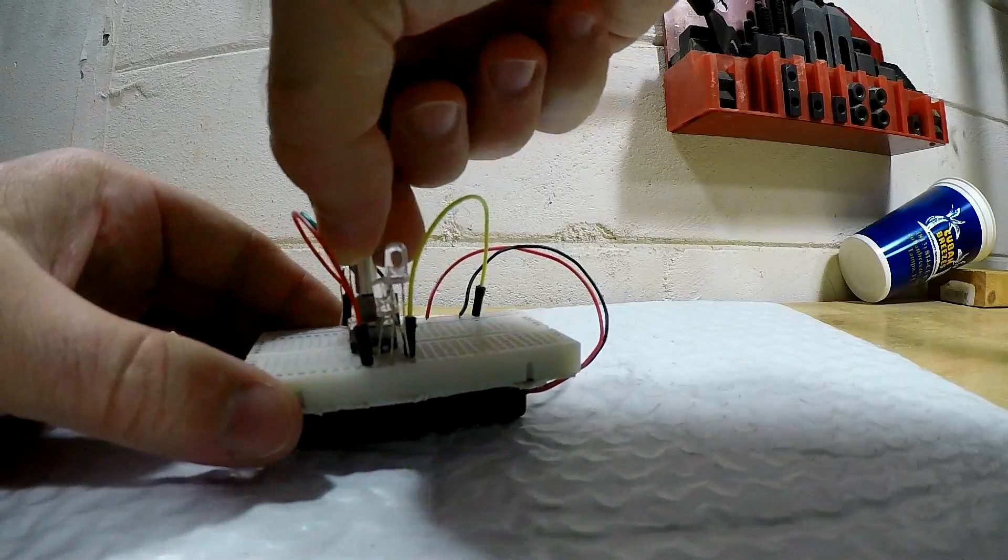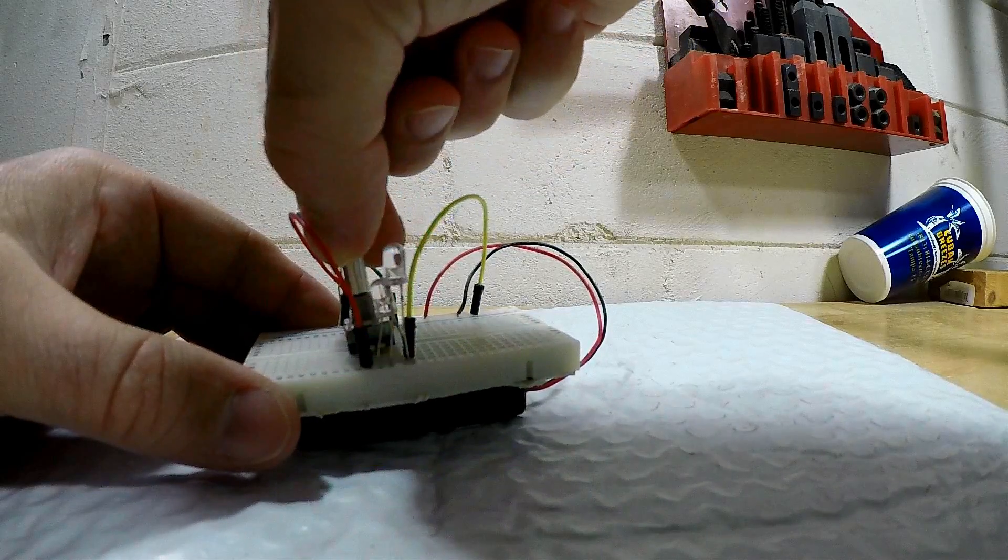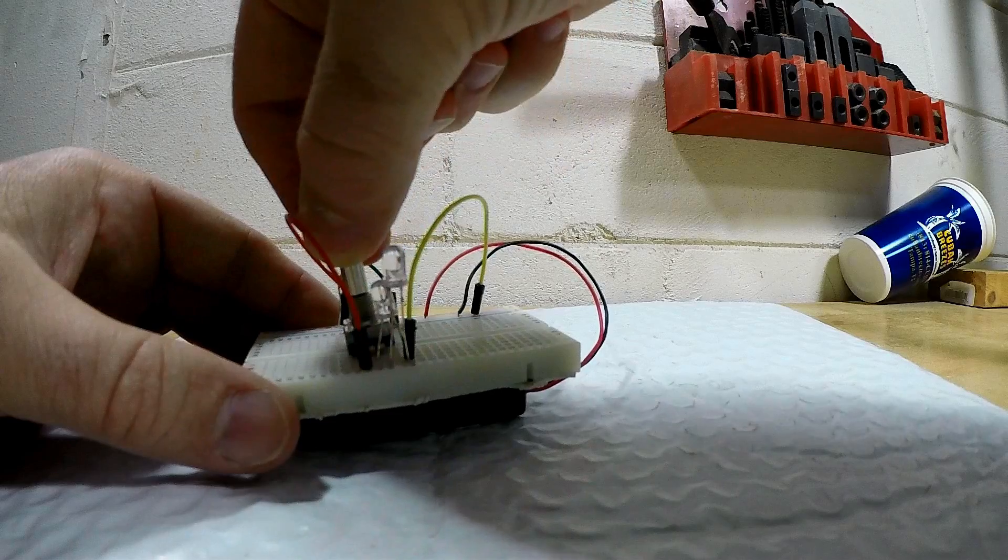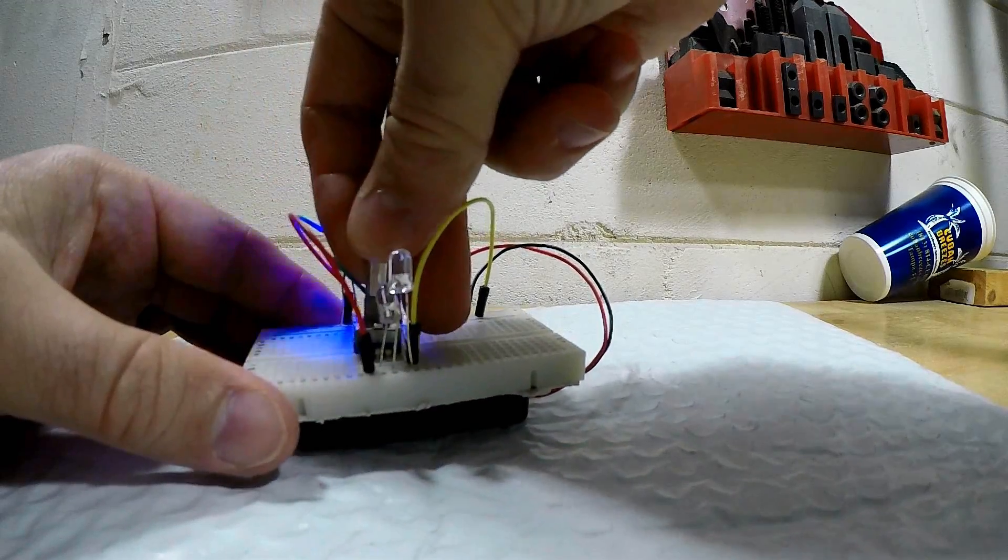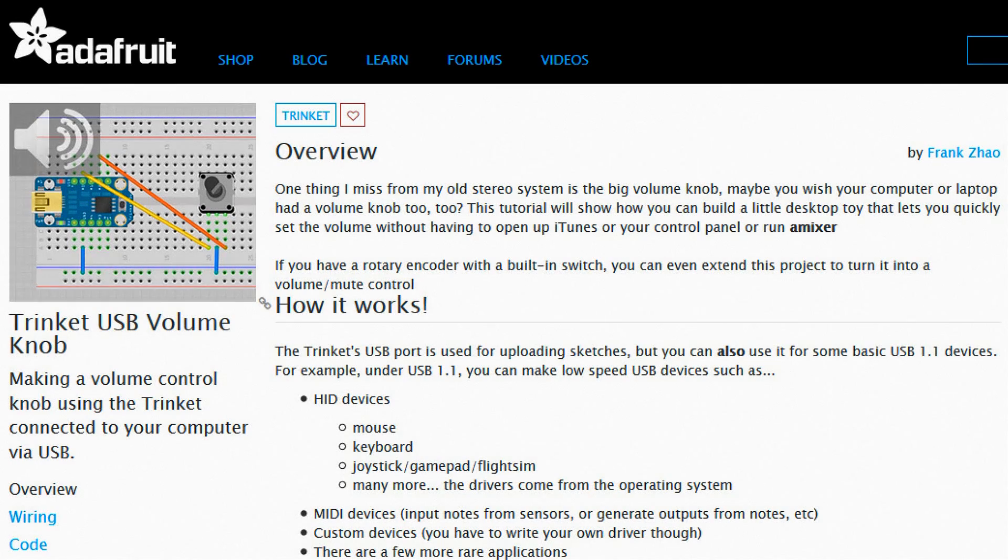Controlling the volume could be accomplished using an encoder, which sends a series of signals to indicate which way the knob is turned. Along with a button, this should give me all the control I needed. To interface with a PC, I chose a Trinket board from Adafruit.